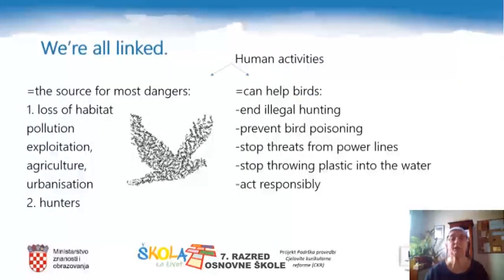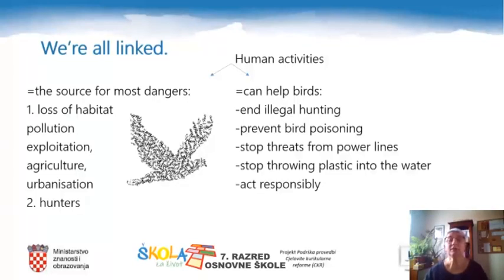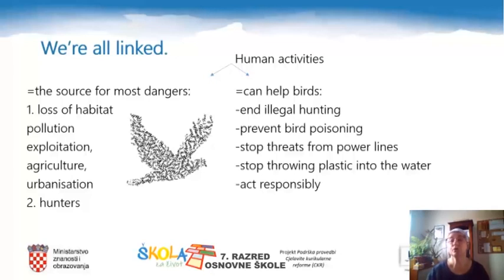We are all linked, and human activities can both be a source of danger for birds and can help birds. The dangers for birds are the loss of habitat caused by pollution, exploitation, agriculture, and urbanization. There are also hunters who hunt and kill illegally many bird species. Human activities can also help birds: we can end illegal hunting, prevent bird poisoning, stop threats from power lines, and stop throwing plastic into the water. Human activities can act responsibly towards all species, birds included.